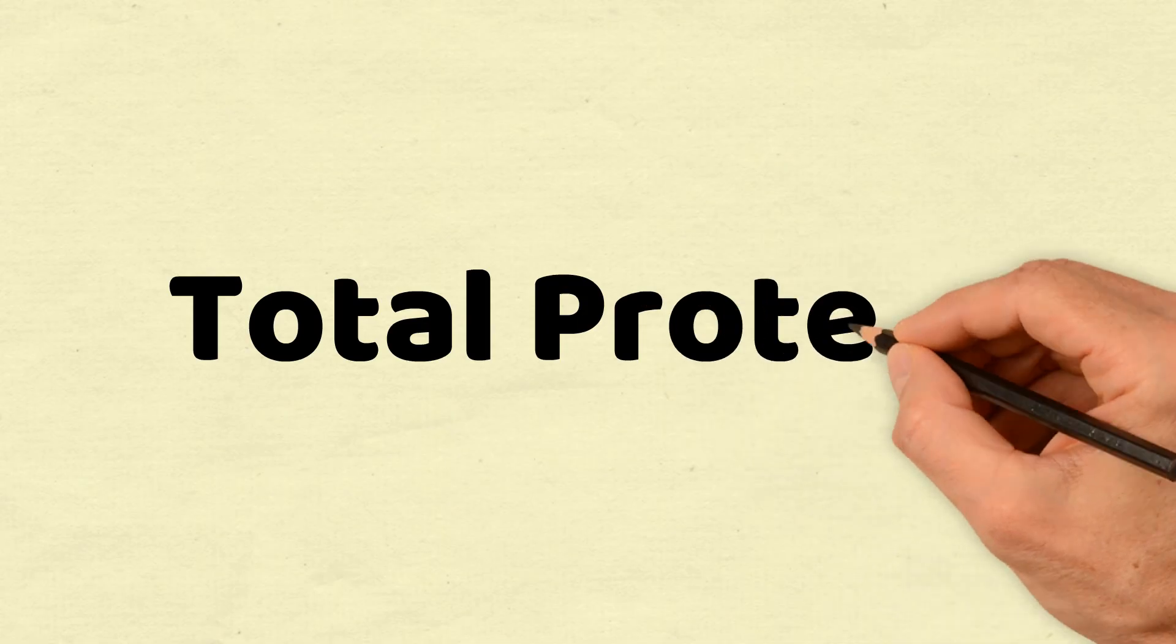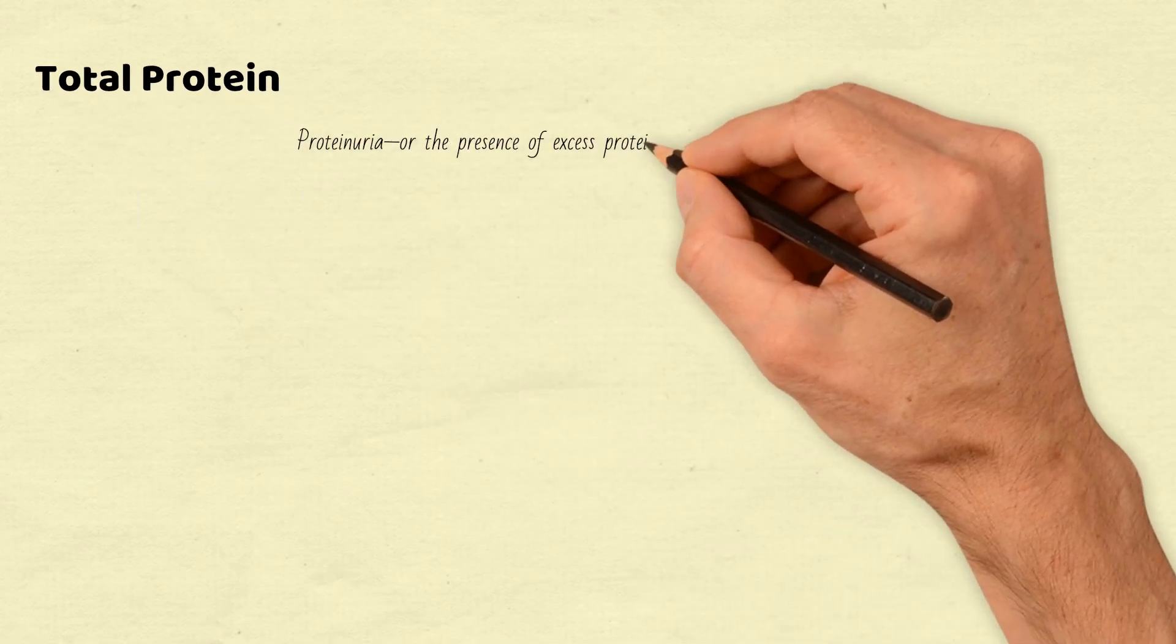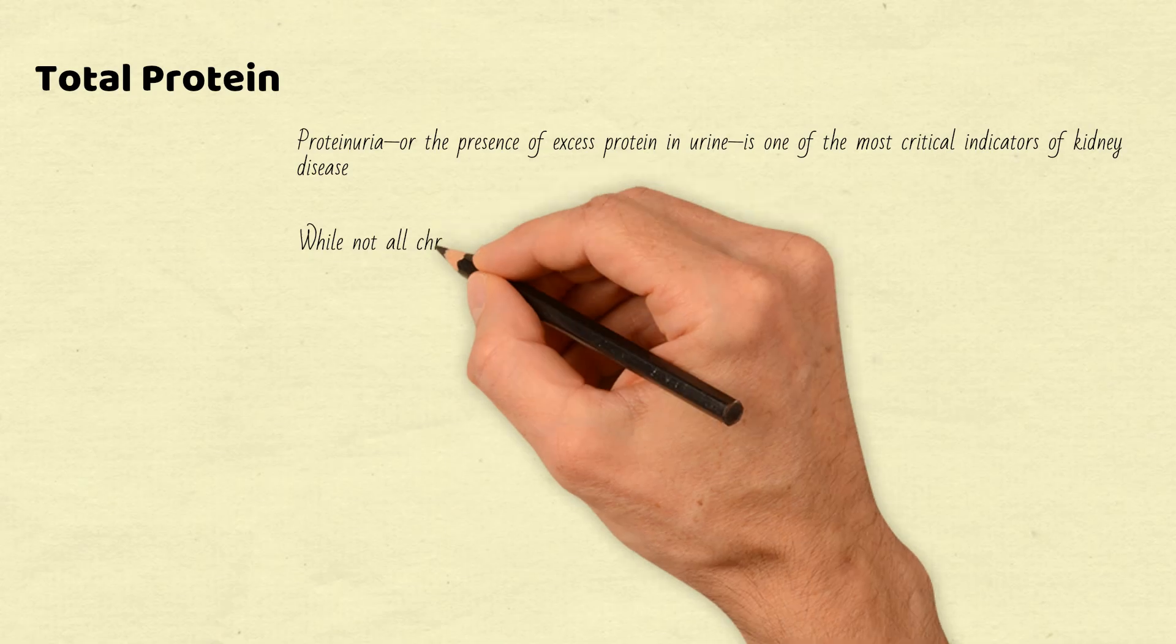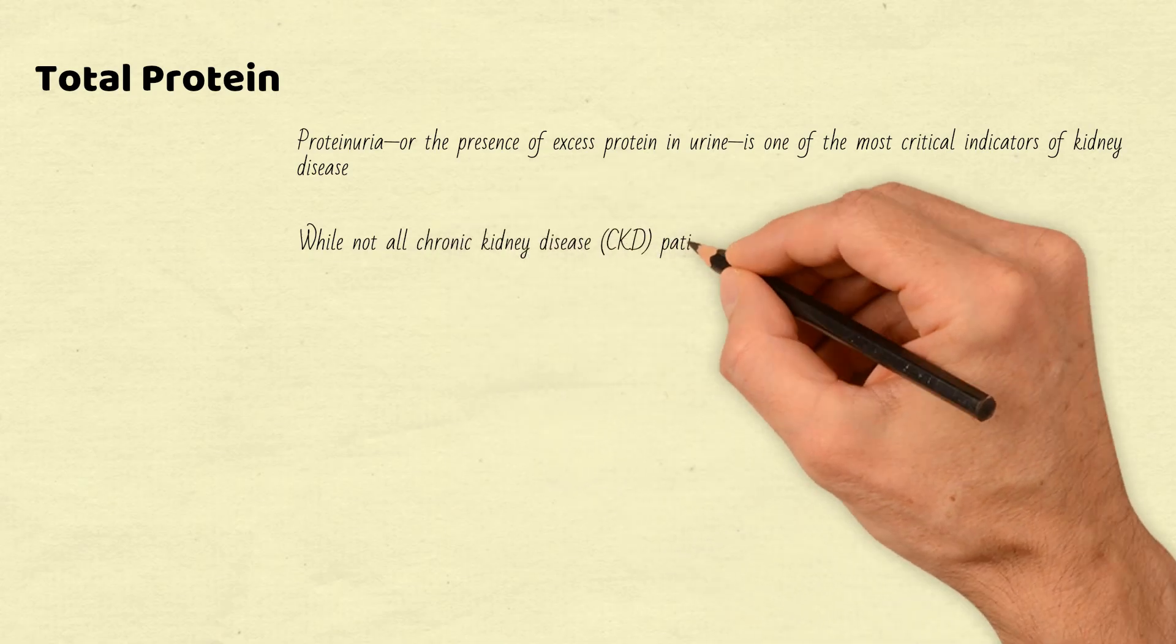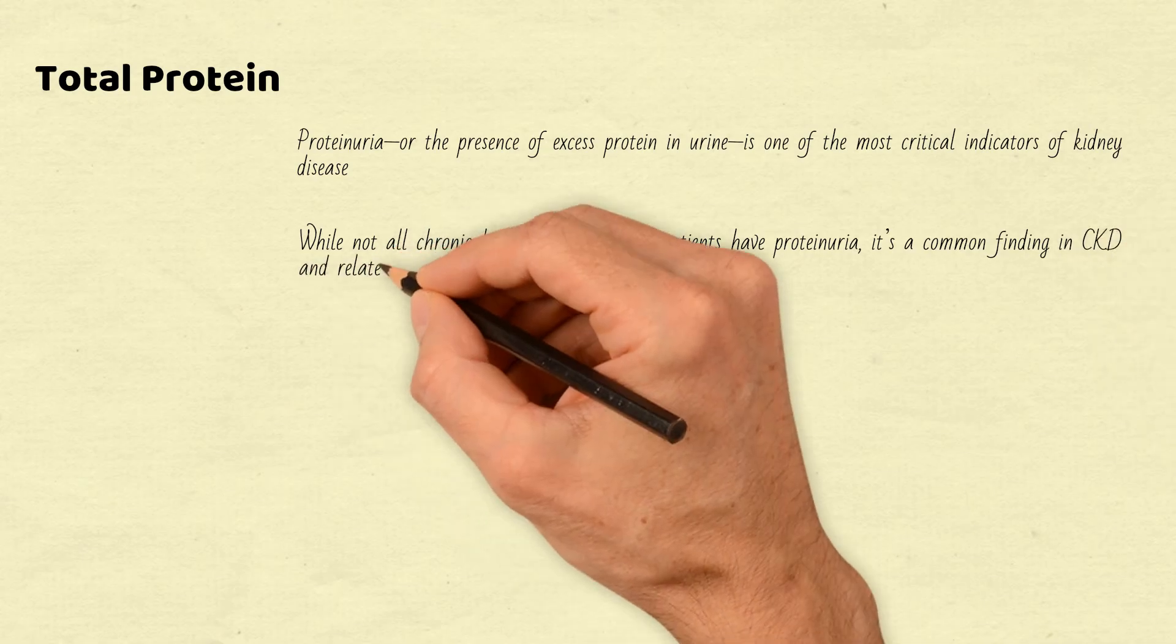Total protein. Proteinuria, or the presence of excess protein in urine, is one of the most critical indicators of kidney disease. It's more than just a marker; higher concentrations are linked to a worse prognosis. While not all chronic kidney disease (CKD) patients have proteinuria, it's a common finding in CKD and related conditions.